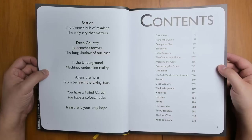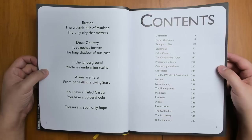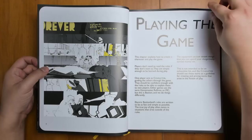Bastion. The electric hub of mankind. The only city that matters. Deep country. It stretches forever. The long shadow of our past. In the underground, machines undermine reality. Aliens are here from beneath the living stars. You have a failed career. You have a colossal debt. Treasure is your only hope. It's a great summary of what this book is about.